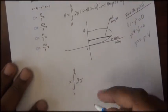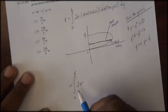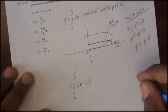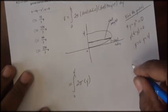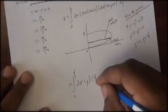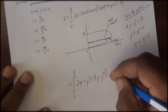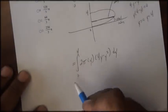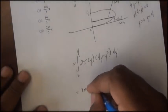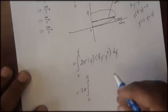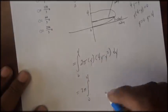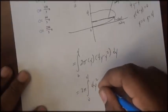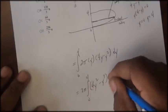So as we set up our shell method formula, we have 2π times the shell's radius, which is y, times the shell's height, which is our function, 4y minus y squared dy. I'll pull 2π in front of the integral operator. I'll simplify y times the quantity 4y minus y squared, and that gives us 4y squared minus y to the third dy.